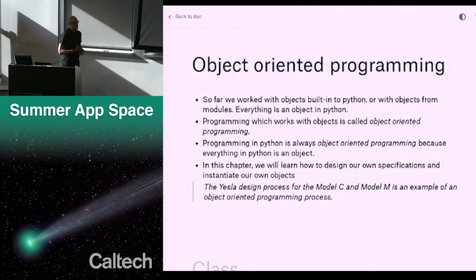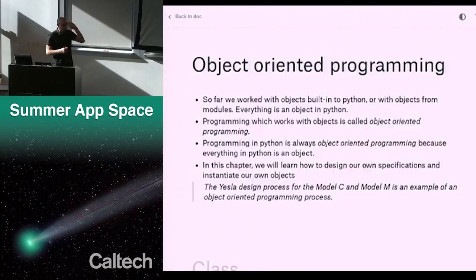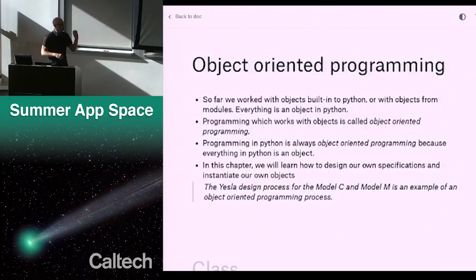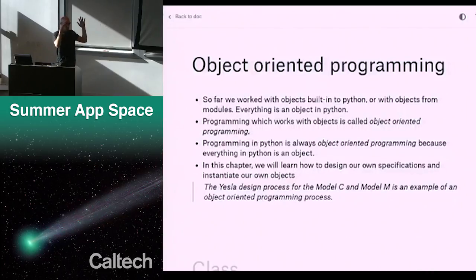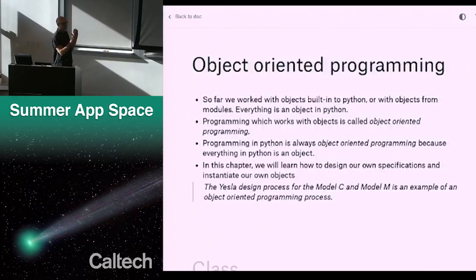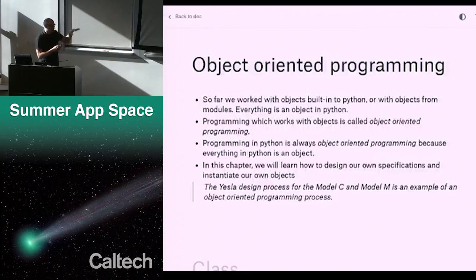When you start to really get into programming with Python and internalize this idea of objects, you'll find yourself pretty much writing everything in objects. When I write Python code now, it's pretty much all written in terms of objects, and then at the very end, when you're going to do the stuff, you actually call on these objects to do the work for you.